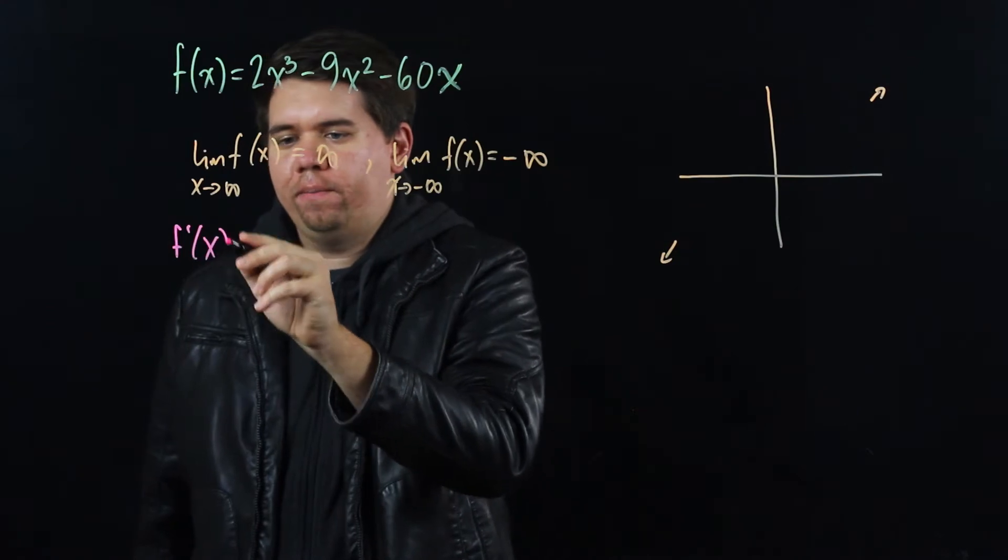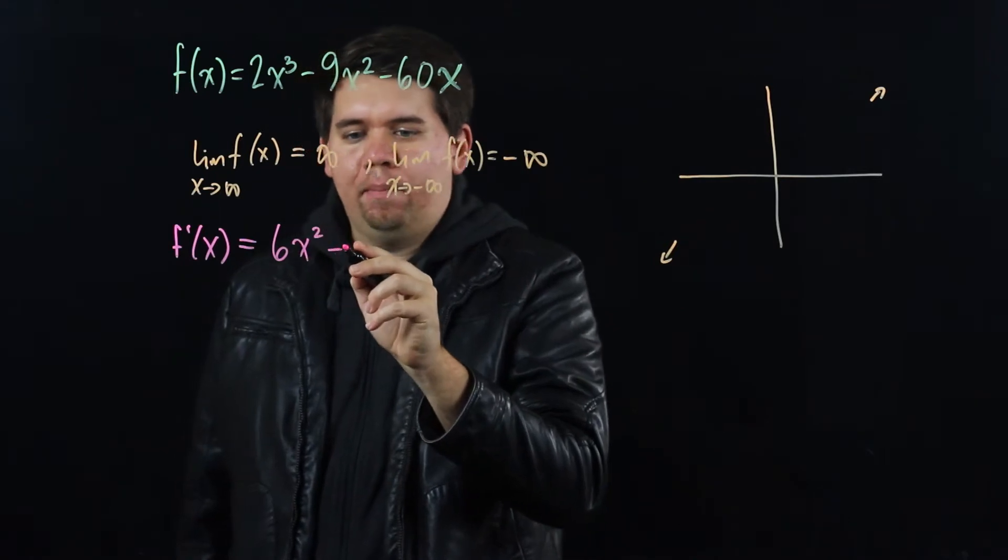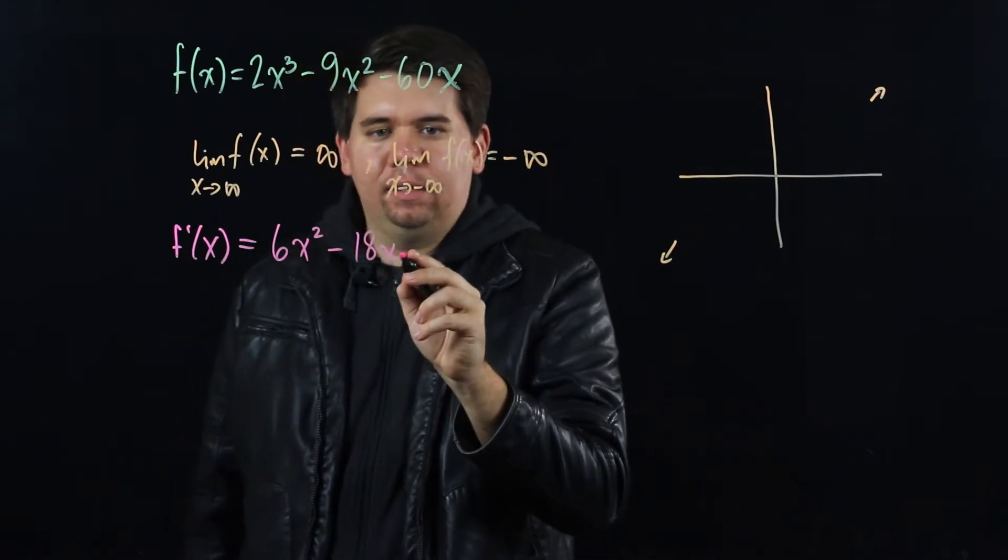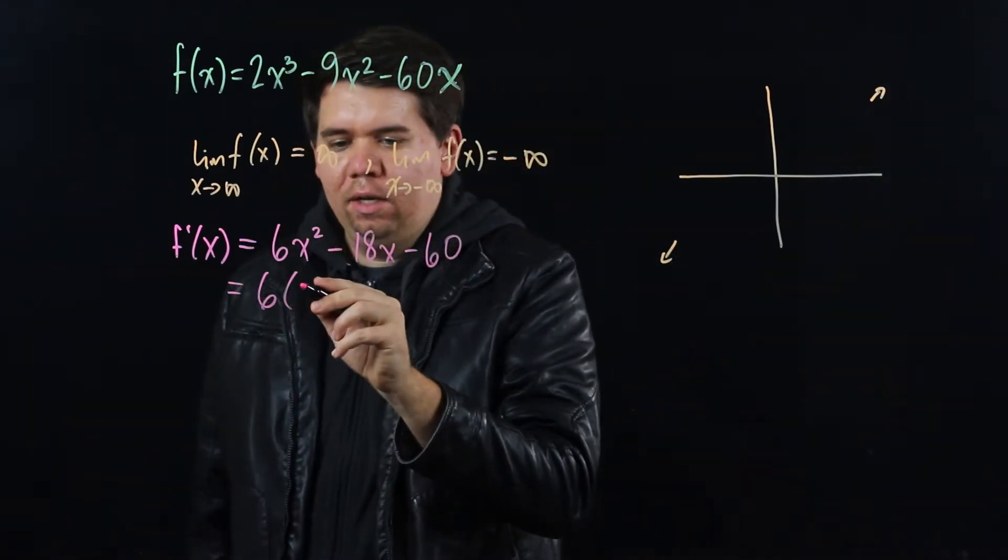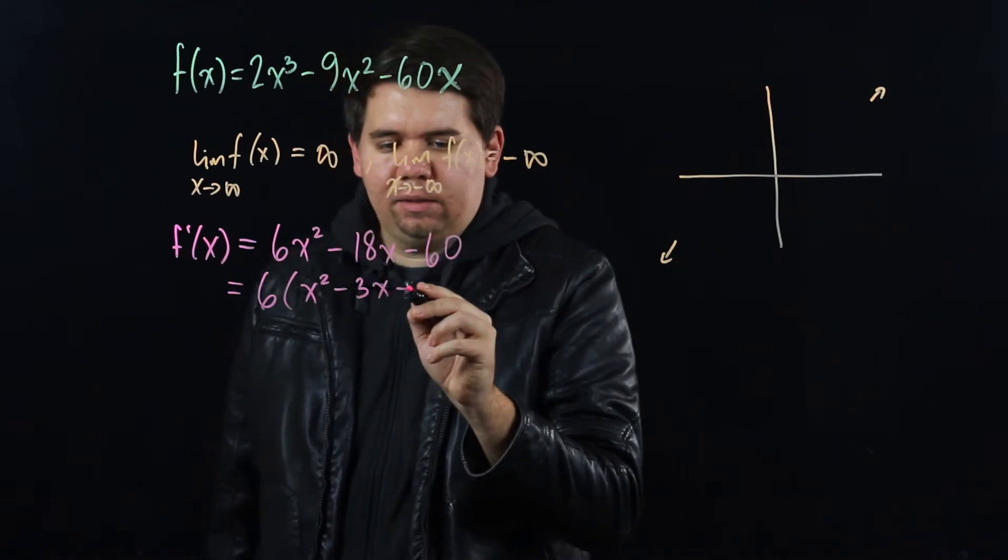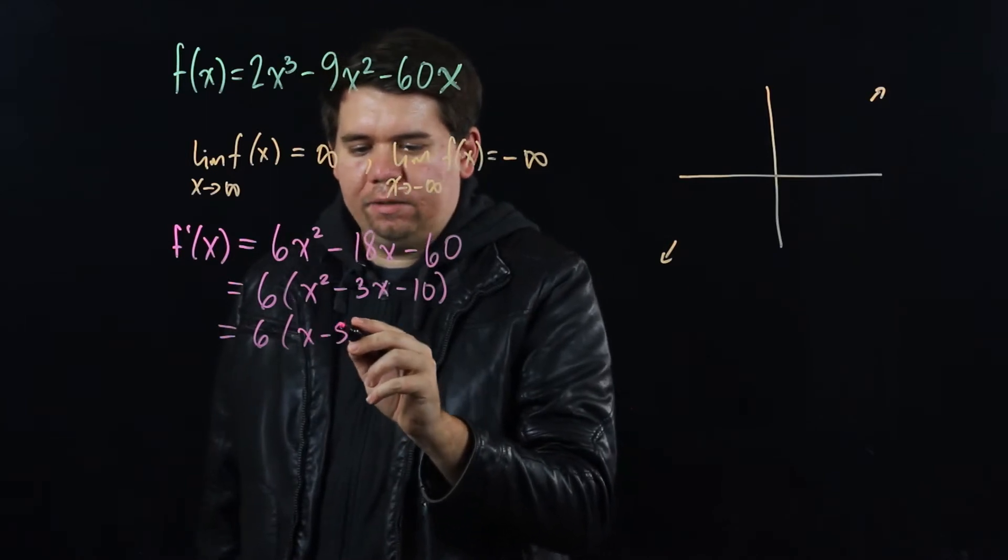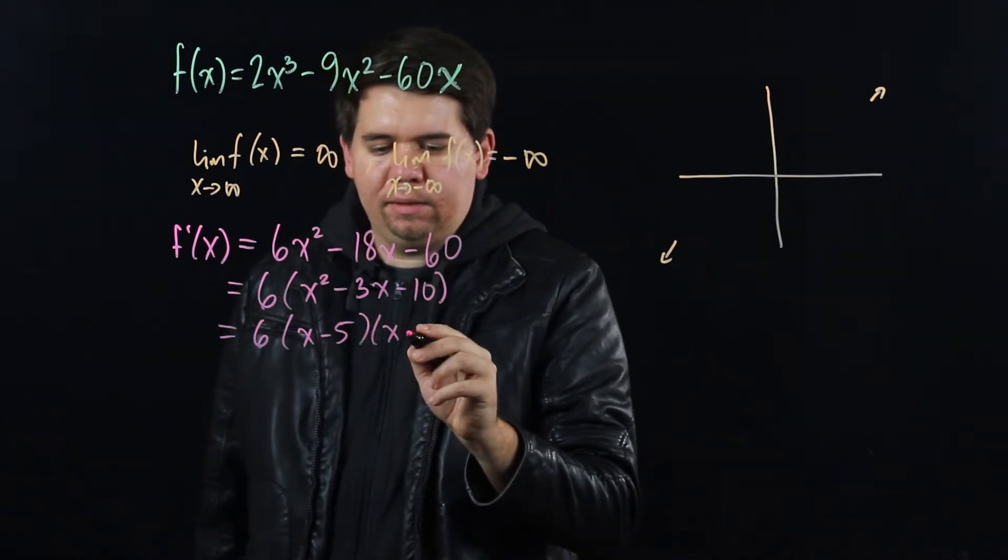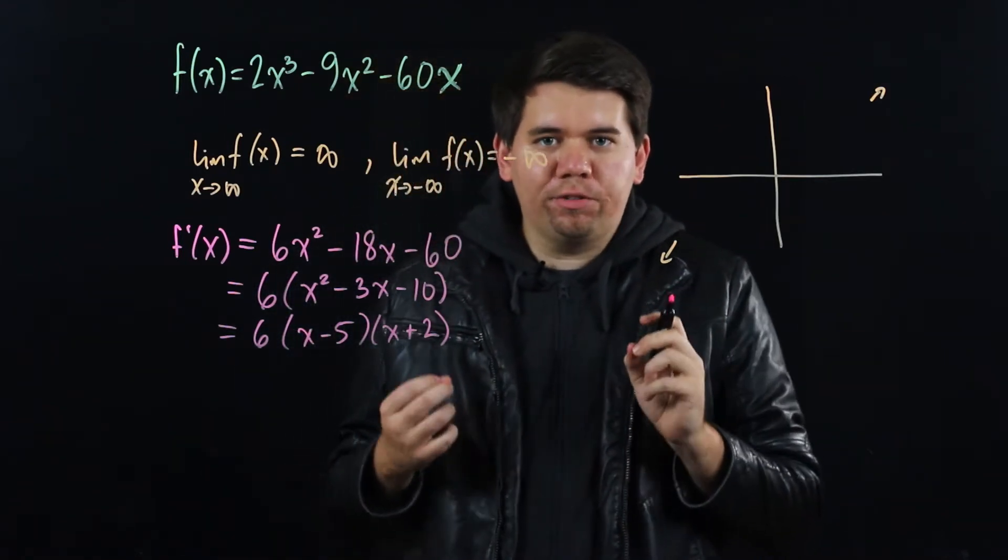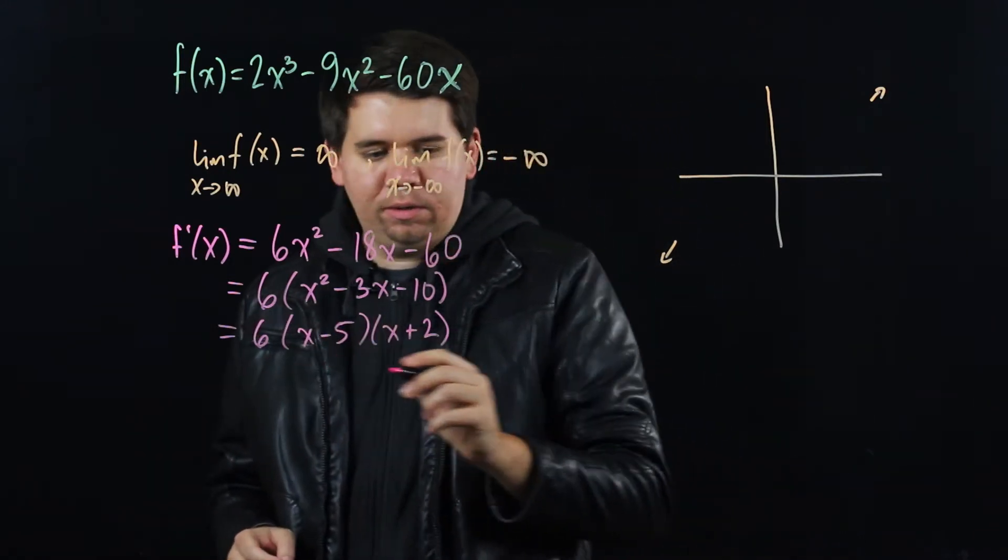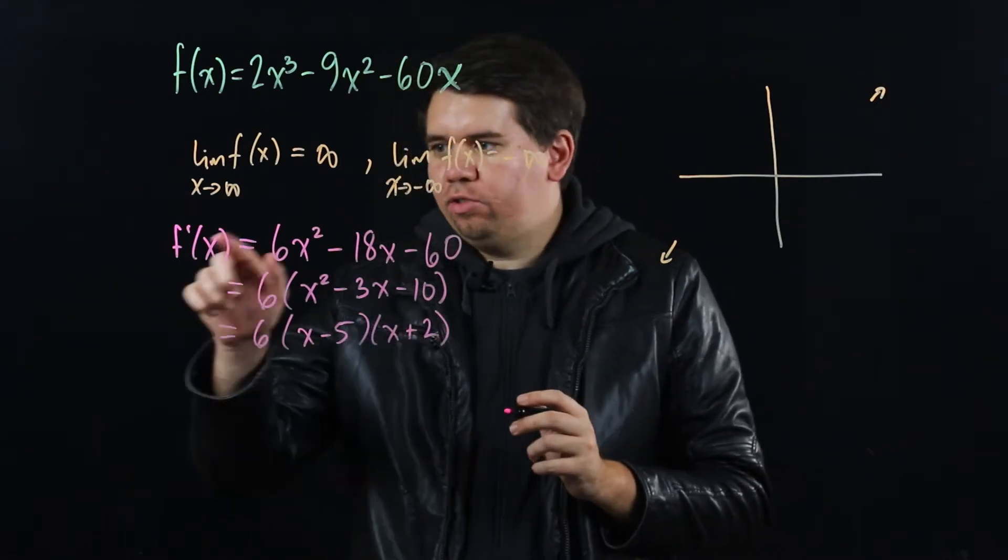The first derivative of the polynomial by the power rule would be 6x squared minus 18x minus 60. You can factor that to pull out the 6, you get x squared minus 3x minus 10, and then we can further factor that down to get x minus 5 times x plus 2. What this tells us is there are some critical points. We're going to identify the critical values.